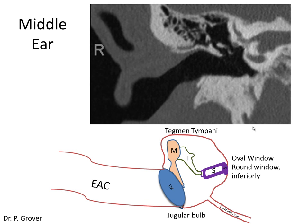Then we're going to look at the middle ear. You want to pay particular attention to tegmen tympani, because if it's disrupted, you will have an opening between the cranial vault and the middle ear, and the concern is the development of meningitis. If the tegmen tympani is disrupted, there's a 3% risk of the patient developing meningitis. If the CSF leak persists for up to seven days, that risk rises to 23%, so if the CSF leak persists, they may decide to perform surgery. Then you'll also look at the ossicles.